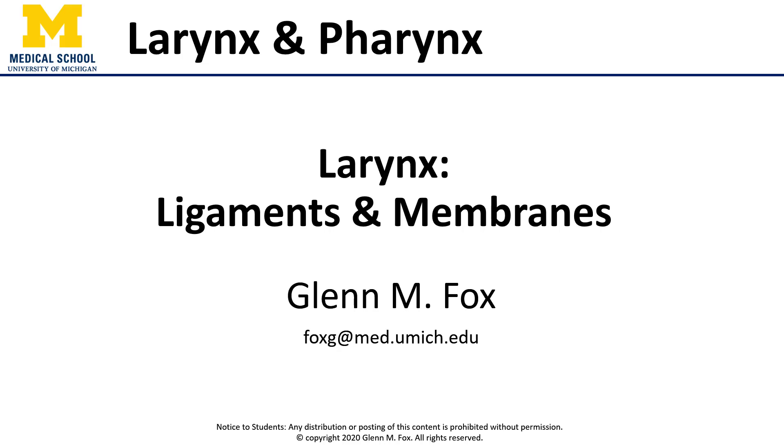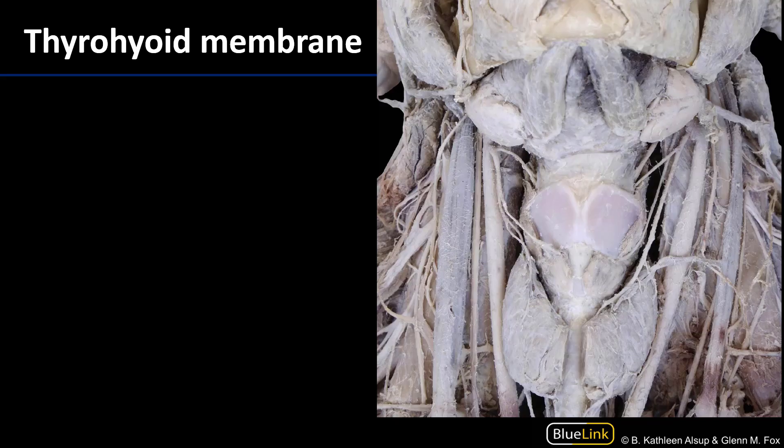Hello everybody. Let's talk about the ligaments and membranes of the larynx. The larynx has both extrinsic and intrinsic membranes and ligaments. Extrinsic membranes are those that connect the larynx to outside structures, whereas intrinsic membranes are those which connect elements of the larynx to other elements of the larynx.